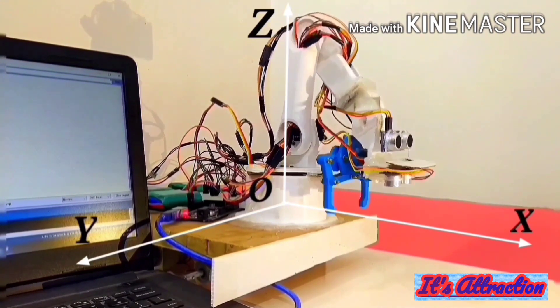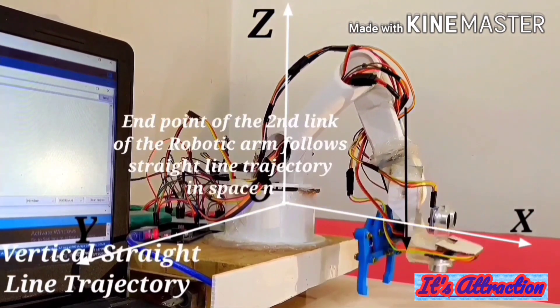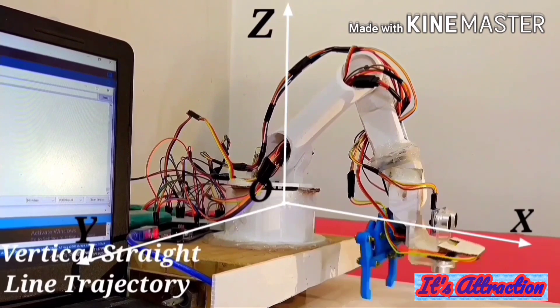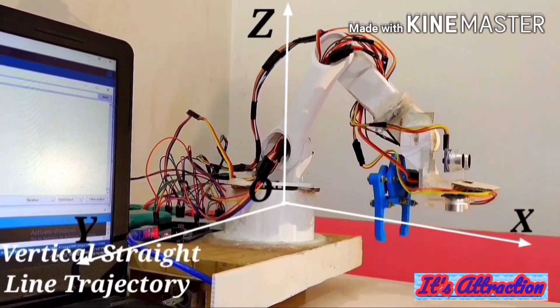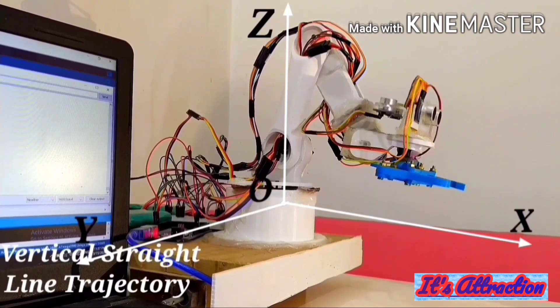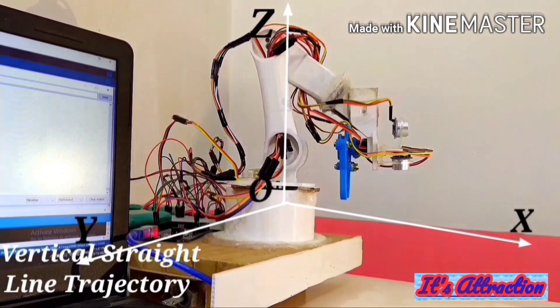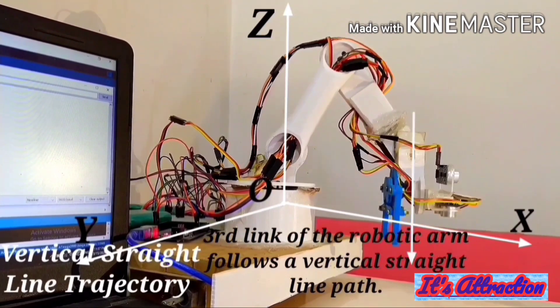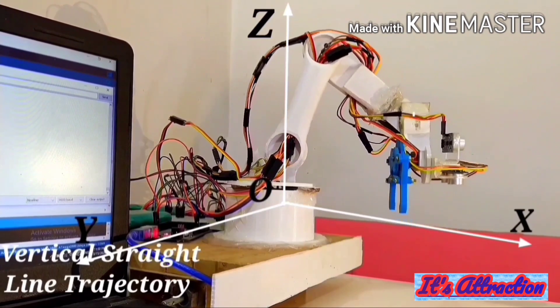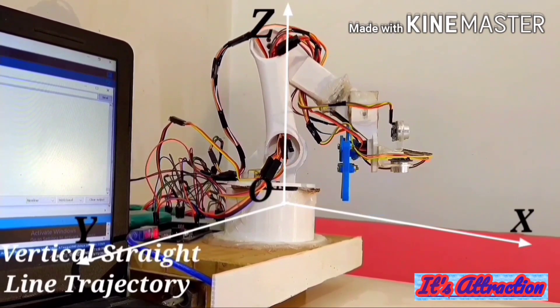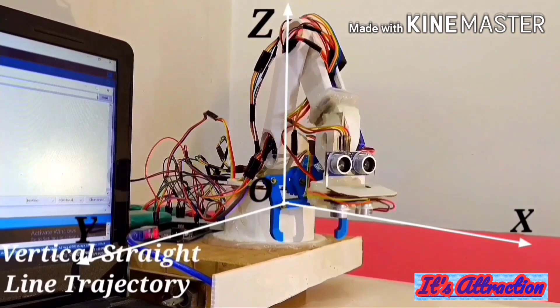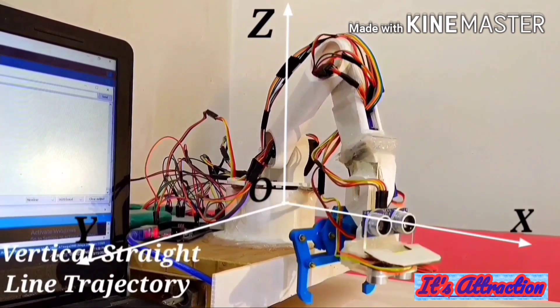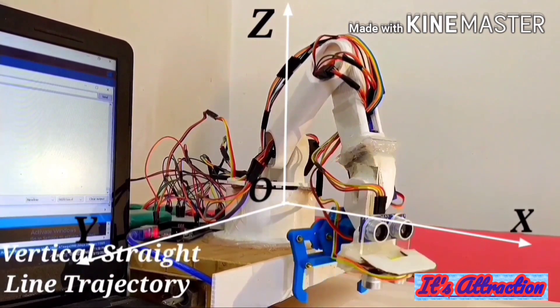Apart from the horizontal straight line trajectories, this five axis robotic arm can even follow vertical straight line trajectories in space. Using the trajectory planning algorithm, the three links of the robotic arm move in space in such a way that the third link, that is the gripper, executes a back and forth motion normal to the XY plane. During the course of this motion, the ultrasonic sensor S1 follows a vertical path.